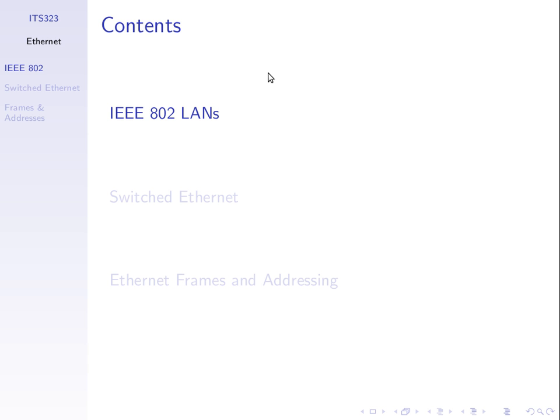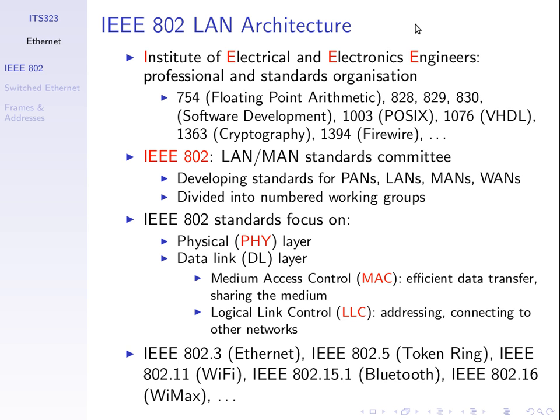First, we'll talk about one of the groups or standards organizations that creates standards regarding LANs. Before we get into Ethernet, you've probably seen or heard of the acronym IEEE — the Institute of Electrical and Electronic Engineers. It's a professional organization where people become members, and one of the things they do prominently is create standards for electrical and electronic engineering, so that different manufacturers implement products following those standards and can interoperate.